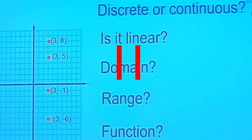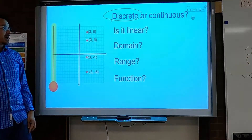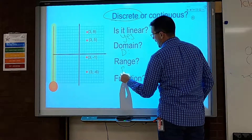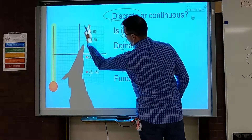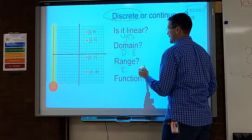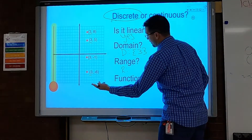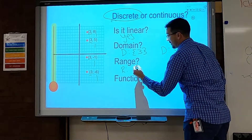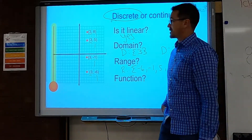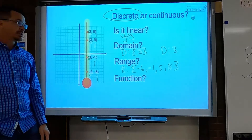Pause and try this one. Discrete or continuous? Discrete — there are just dots. Is it linear? It definitely looks like a straight line, so yes. Domain left to right: all points share the same x-value of 3, so the domain is just {3}. Range bottom to top: negative 6, negative 1, 5, and 8. Since x repeats (it's always 3), this is not a function. The vertical line test also confirms multiple y-values for x = 3.